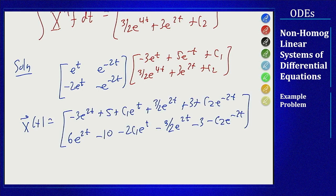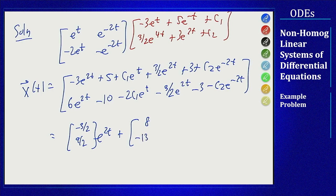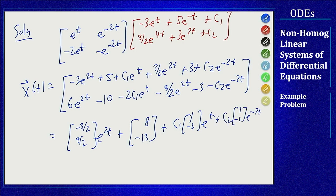If we collect these like terms, we will see on an e to the 2t, I have minus 3 plus 3 halves, which is negative 3 halves, and 6 minus 3 halves, which is 9 halves. On constants, I have 8 on top minus 13 on the bottom, and then I have my c1 times 1 minus 2 e to the t plus c2 times 1 minus 1 e to the minus 2t, which exactly matches what we got for the setup by undetermined coefficients.